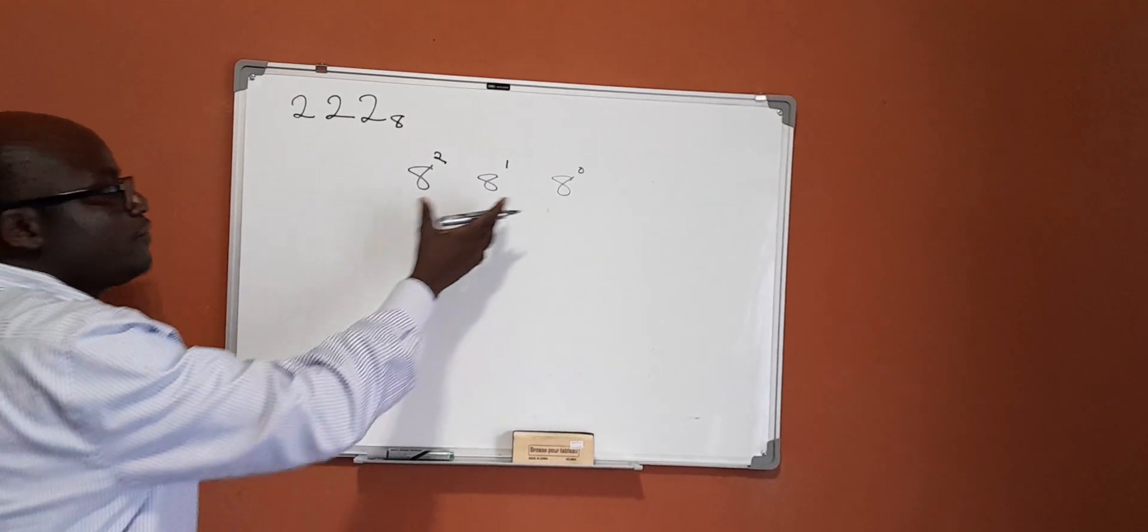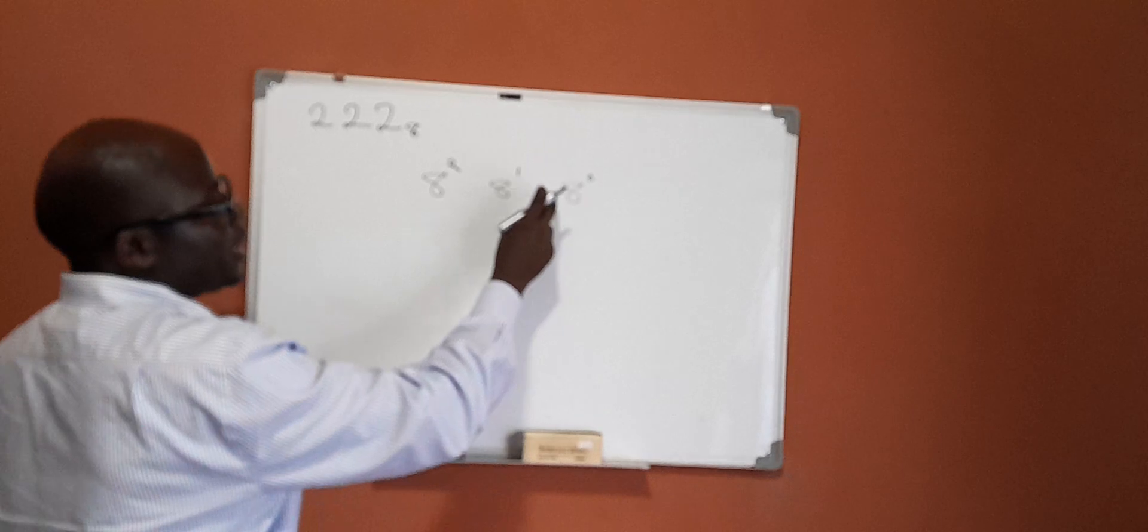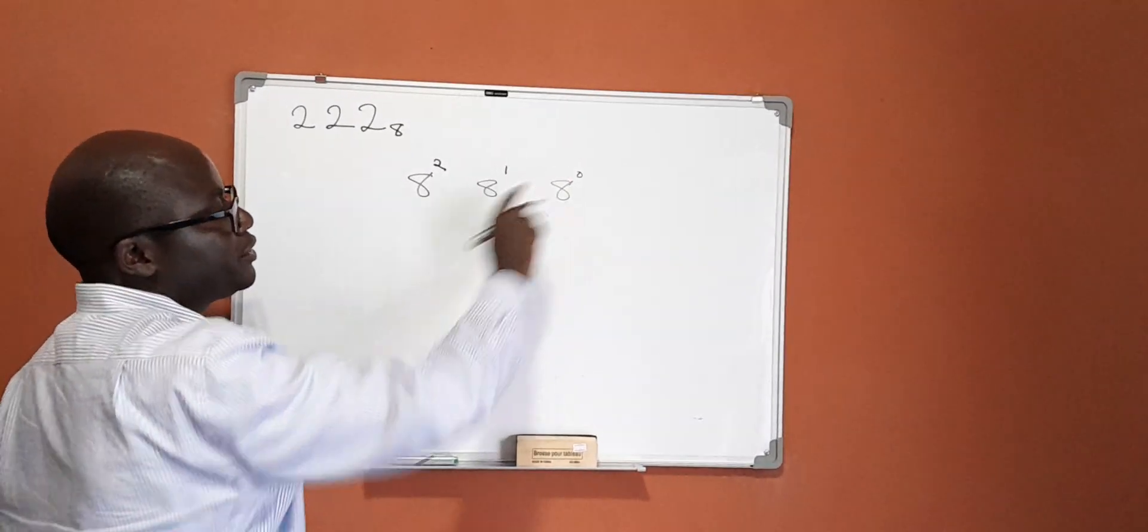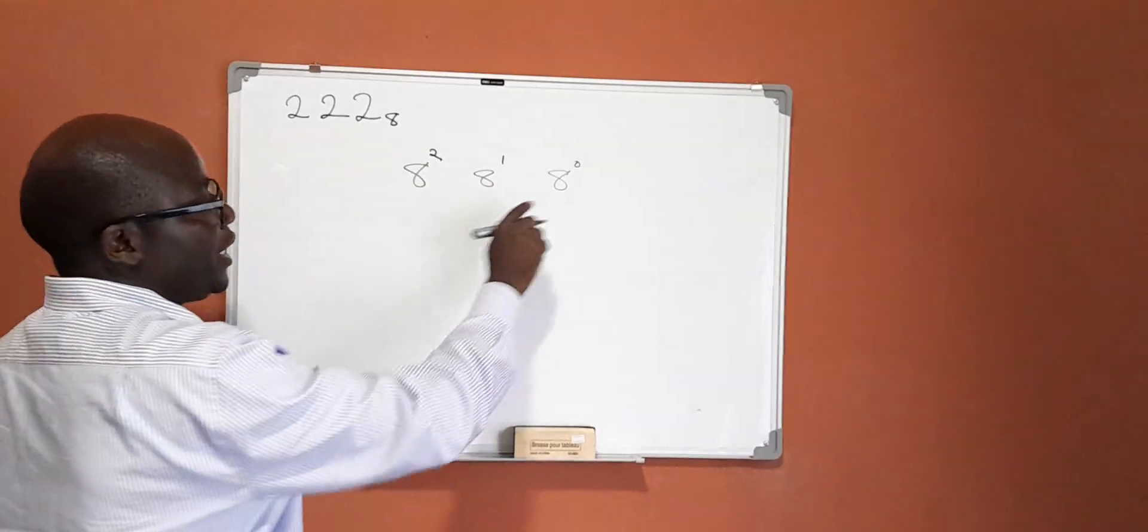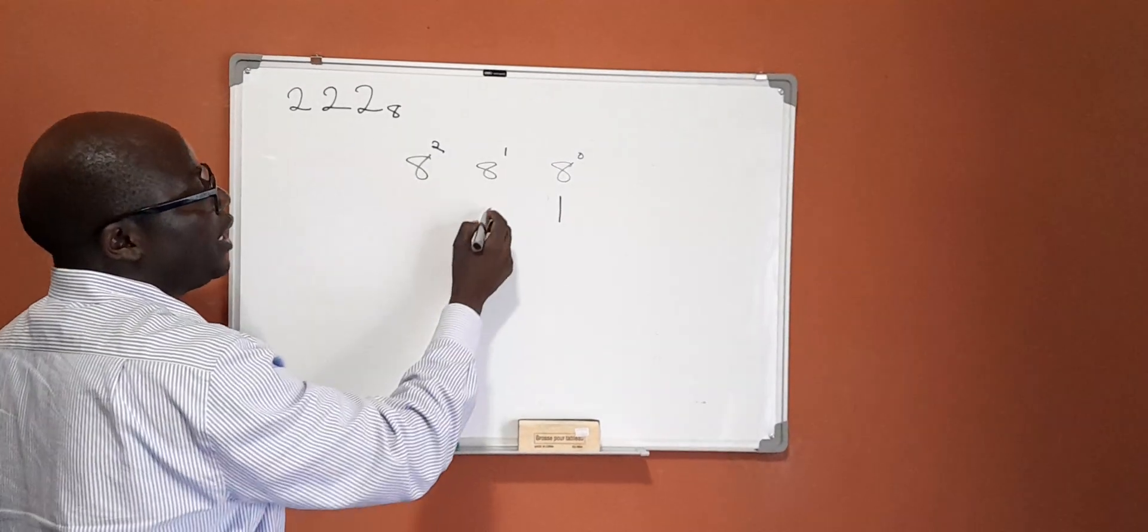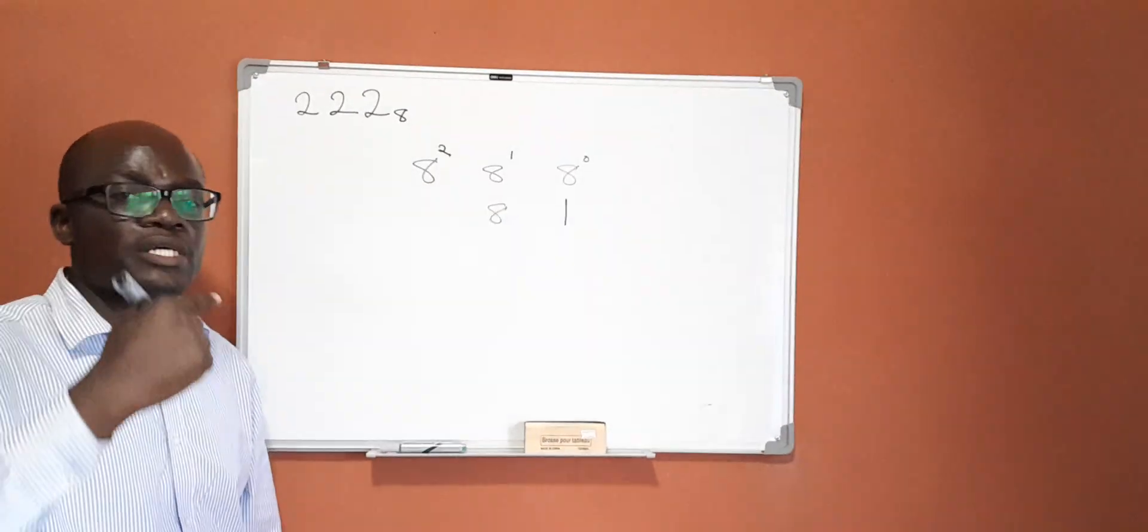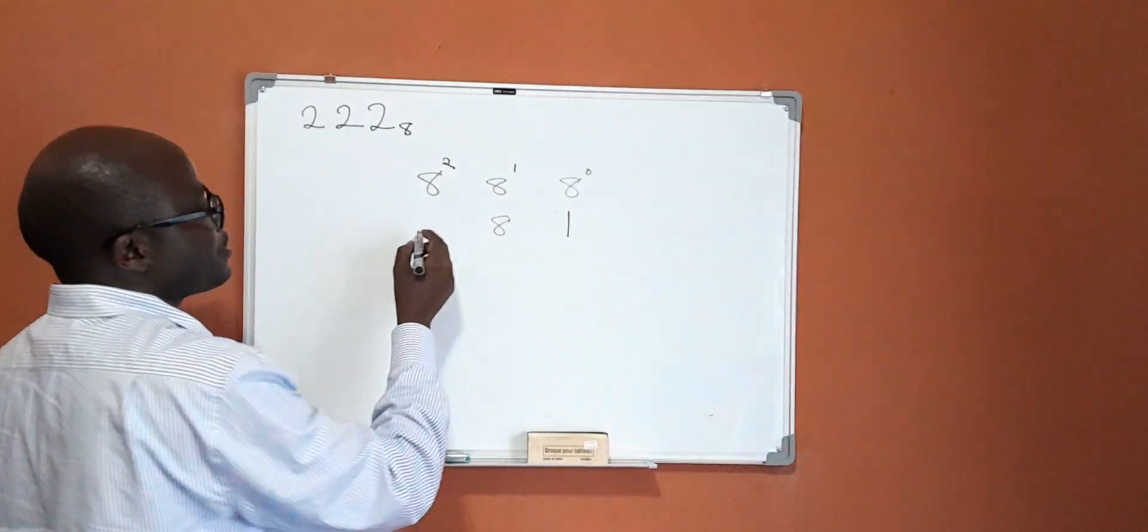Next, let us find the values of this. 8 to the power 0 is 1. Any number to the power 0 equals 1. So 8 to the power 0 is 1, 8 to the power 1 is 8, 8 to the power 2 means 8 times 8, which is 64.